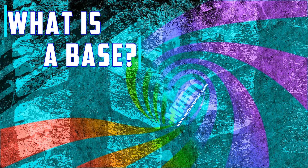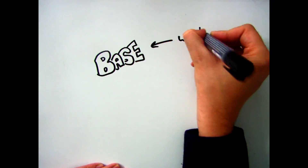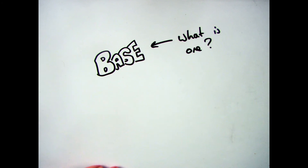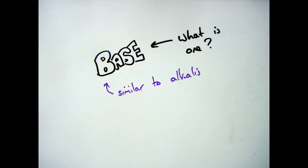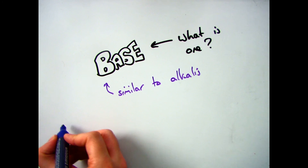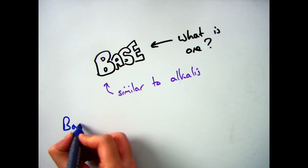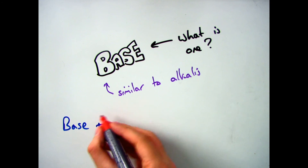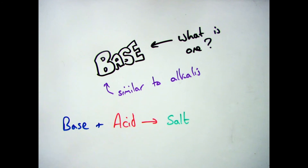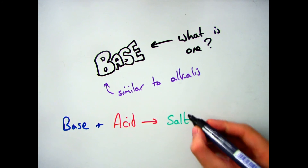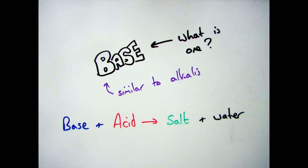Hi guys, welcome to this video on acids and bases where we're going to be looking at what a base is. The first thing we need to know when we talk about a base is that it's similar to an alkali. Now if you were to look at the general word equation, if you had a base and you reacted it with an acid, every single time you would get a salt and water.